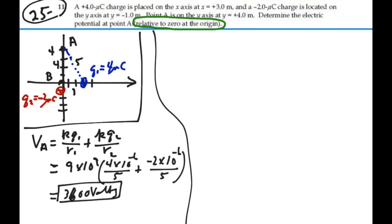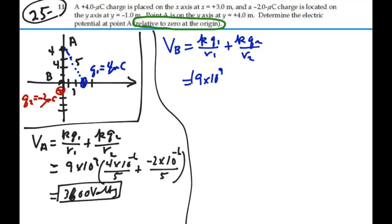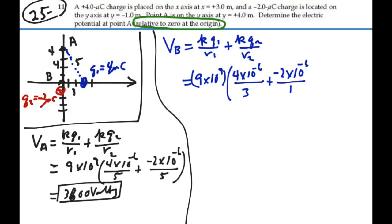What about the origin, point B? The potential at B is equal to KQ1 over R1 plus KQ2 over R2. This would be 9 times 10 to the 9 for K, times Q1, which is 4 micro coulombs (4 times 10 to the minus 6), over its distance from the origin, which is strictly 3 meters, plus Q2, which is minus 2 micro coulombs, over its distance from the origin, which is 1.